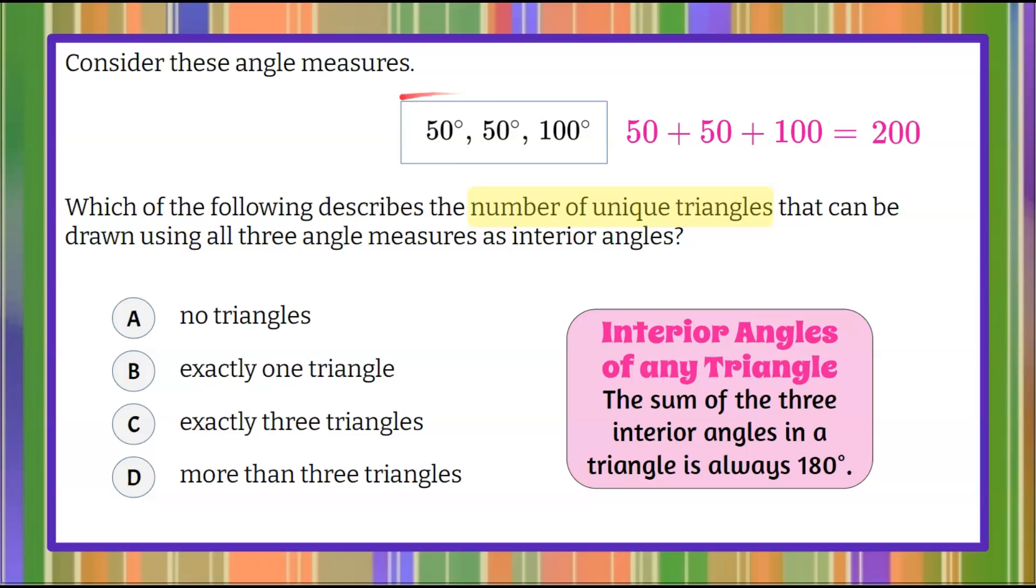So now we know that these three angle measures added up together are 200 degrees. Therefore, there can't be any triangle formed using those three angle measures because that is greater than 180 and it must be equal to exactly 180. So we can determine that we cannot make any triangles. So answer choice A, no triangles can be formed with these three angle measures.